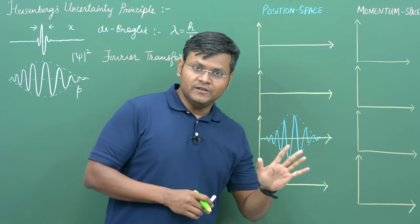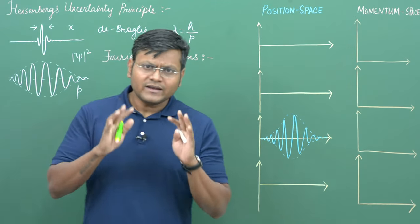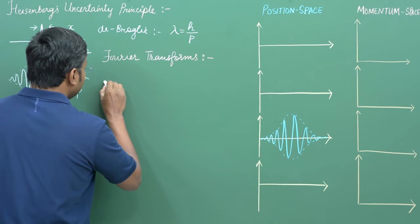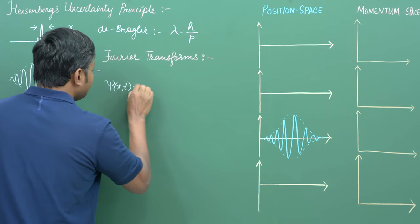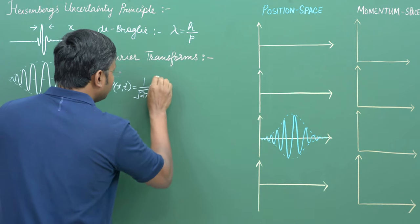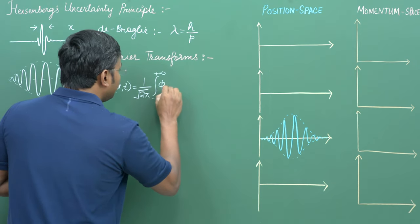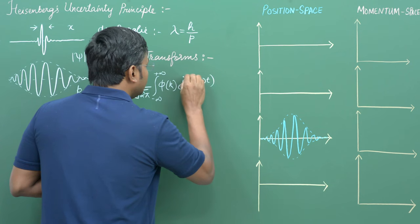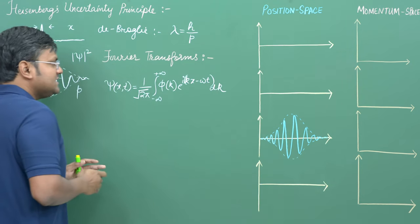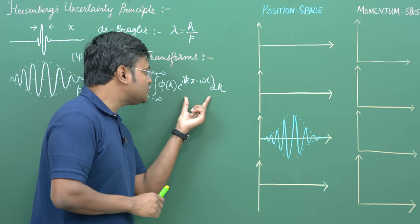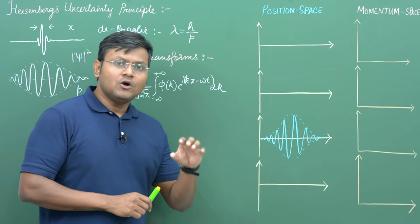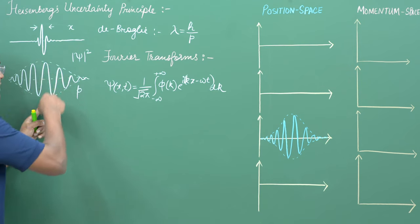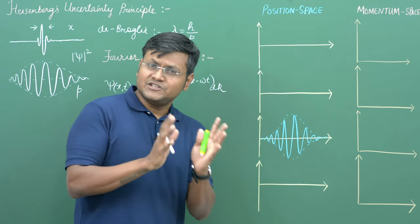Let me elaborate on this further, but first let us talk about the concept of the wave packet. We are going to use psi as a function of x and t, which equals 1 over root(2π) times the integral from minus infinity to plus infinity of phi(k) e^(i(kx - ωt)) dk. This simply means you have a large number of plane wave solutions superimposed over each other so that they constructively interfere in a very tiny region to get a peak maxima, and destructively interfere everywhere else. This is essentially the concept of a wave packet.